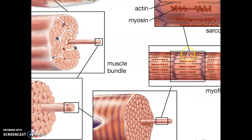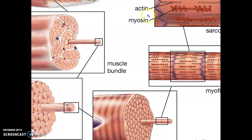When the muscle contracts, the myosin grabs the actin and pulls, shortening the sarcomere. There is a chaperone molecule on the actin called tropomyosin that blocks myosin from grabbing the actin. Another molecule called troponin — which looks like Mickey Mouse — is where calcium binds, moving the tropomyosin so myosin can grab the actin and pull.